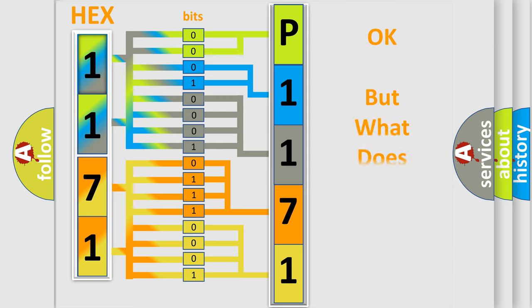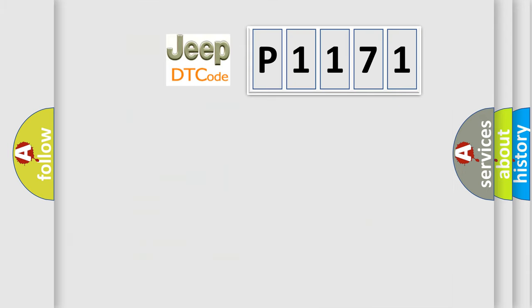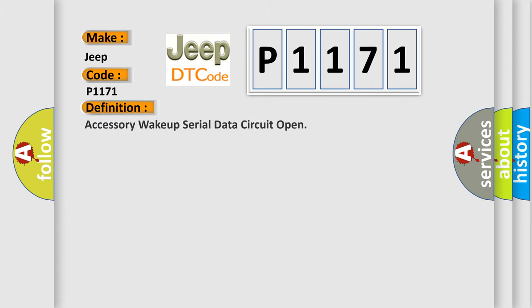We now know in what way the diagnostic tool translates the received information into a more comprehensible format. The number itself does not make sense to us if we cannot assign information about what it actually expresses. So, what does the diagnostic trouble code P1171 interpret specifically for Jeep car manufacturers? The basic definition is: Accessory wake up serial data circuit open.